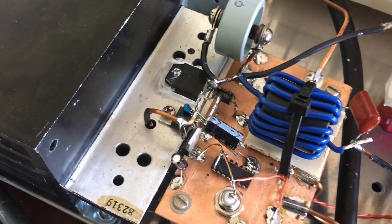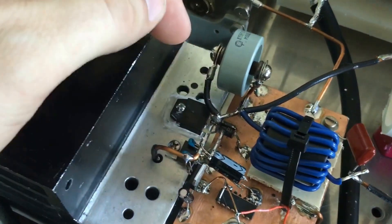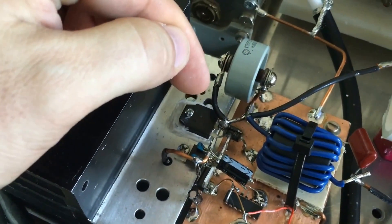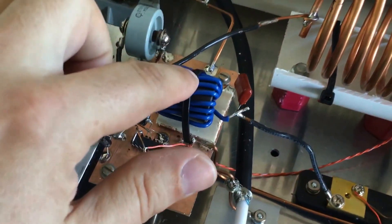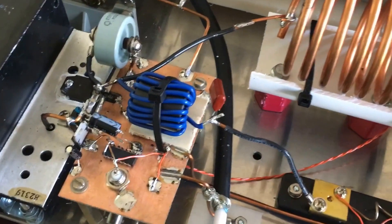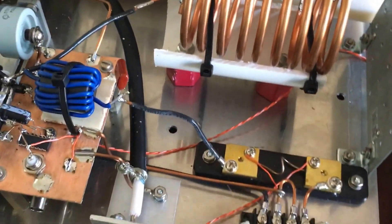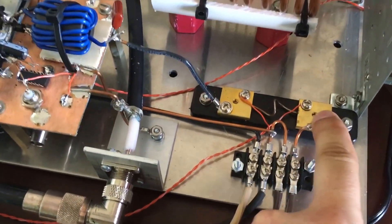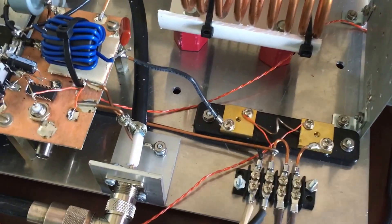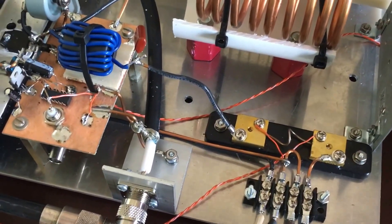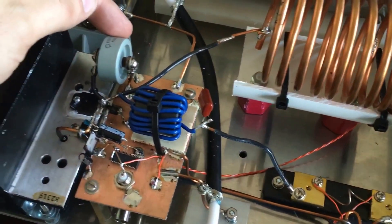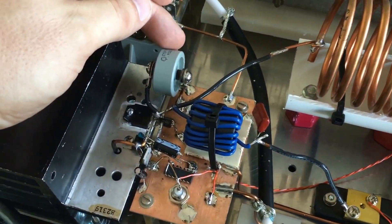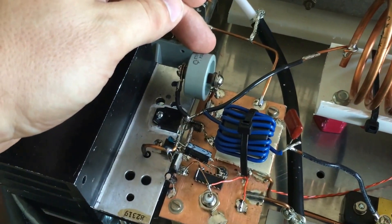That drives a single MOSFET right here. It's an FQA 11N90 and this is the drain choke right here. It supplies 48 volts through this shunt. This measures drain current so I can see how much current is being drawn and this doorknob capacitor right here is the shunt capacitor for the FET.